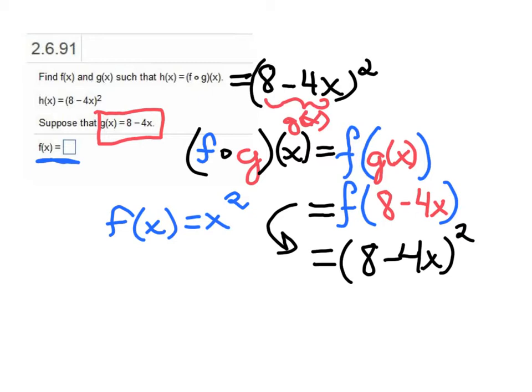Remember, the way you evaluate f of anything is, when you're given an equation like this, wherever you see an x, you substitute everything that's written inside the parentheses. So we would substitute the whole 8 - 4x here, then apply that second power. This would give us h(x).